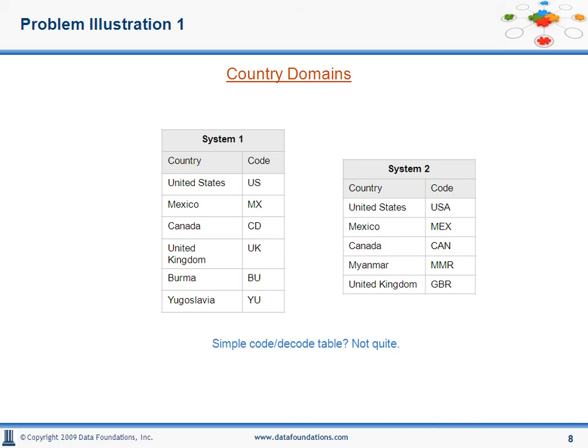The systems are similar but not identical. Both are subsets of a bigger list. How, then, would we harmonize these lists?